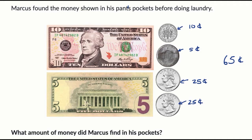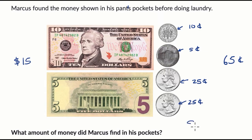Now when we look at the dollar bills, we have $10 plus $5, which is $15. If we add $15 to 65 cents, what we're going to end up with is $15 and 65 cents.